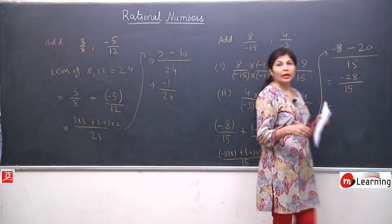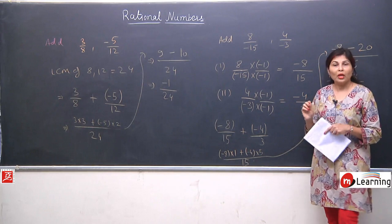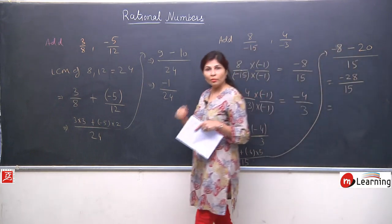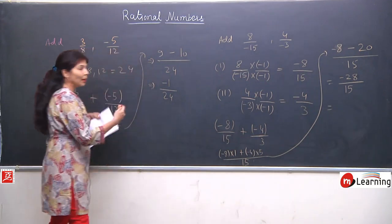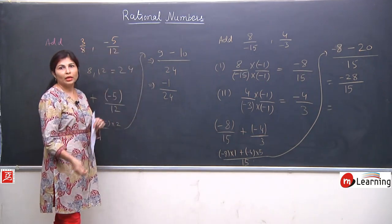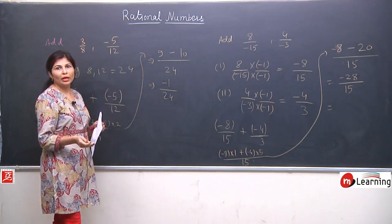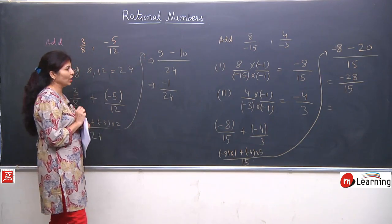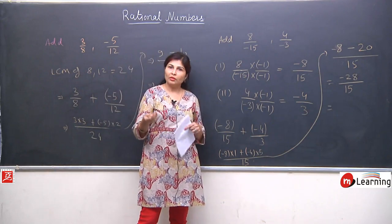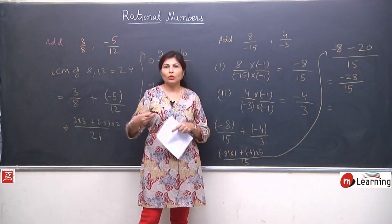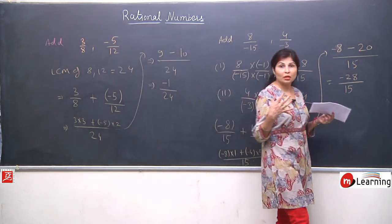So students, I have taken a variety of questions where sometimes the numerator is negative, sometimes the denominator is negative. If the numerator is negative, that is okay. But if the denominator is negative, we need to make it positive first by multiplying by minus 1 in both numerator and denominator — as per our first property. Then we take the LCM and solve accordingly. These are simple questions but you need to practice a lot.